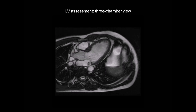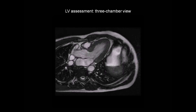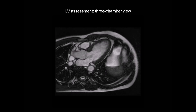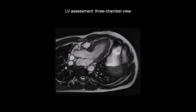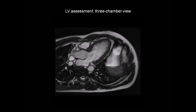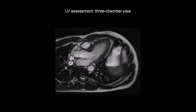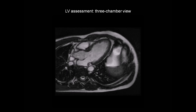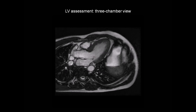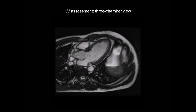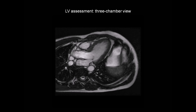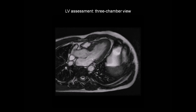Looking at the 4, 2 and 3 chamber views together, we can get an eyeball assessment of overall left ventricular systolic function, and also inspect the regional wall motion of each of the 16 myocardial segments.